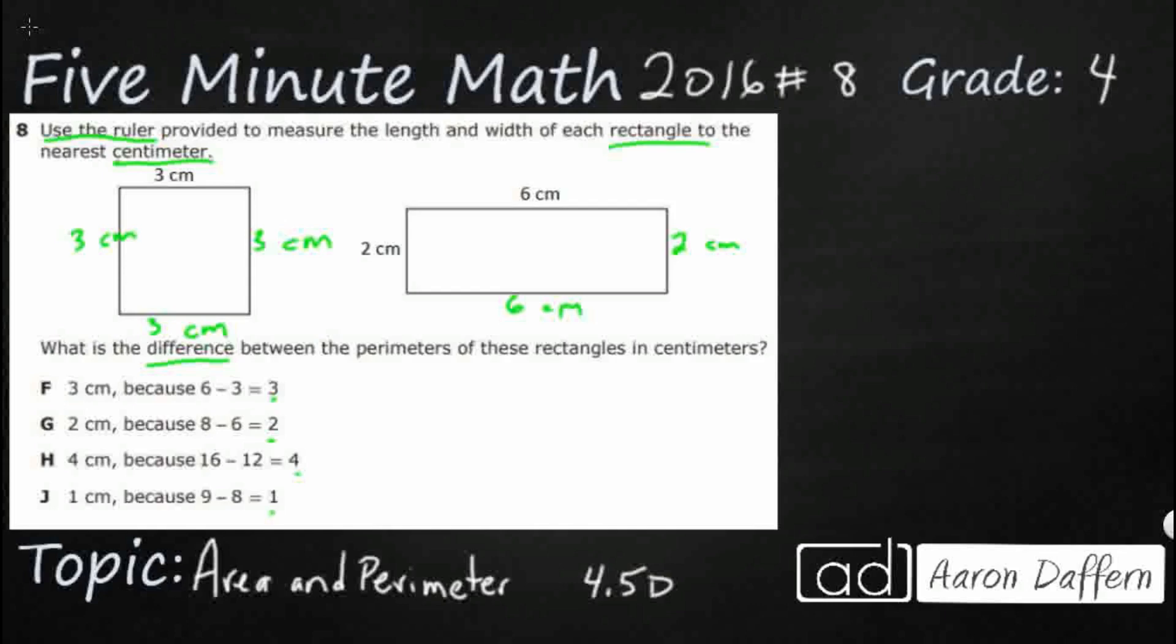The difference is the answer to a subtraction problem, and so even if you're a little bit stuck on that, they're going to give you enough clues in the four answer selections to really figure out. So we're subtracting these two, and so obviously we need to put the biggest one first. So the only thing we're really missing is the perimeter.